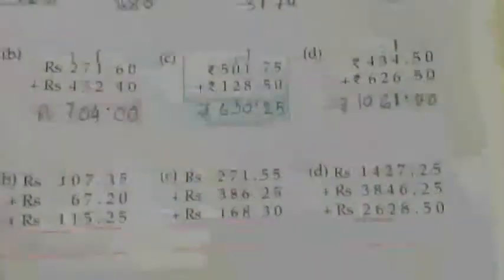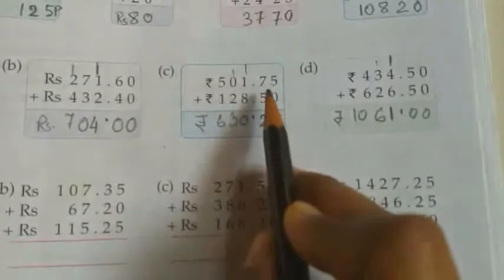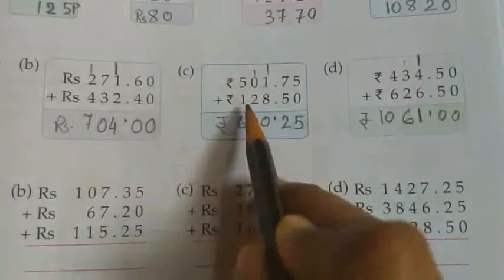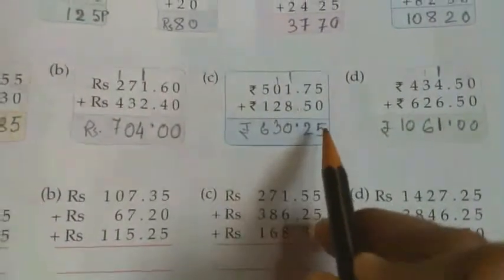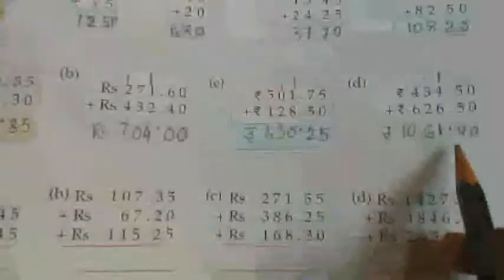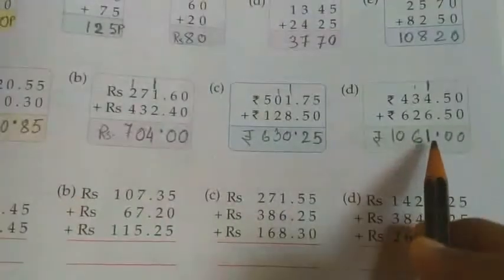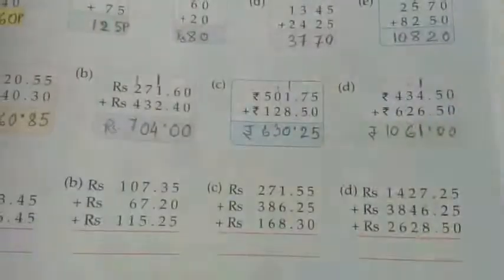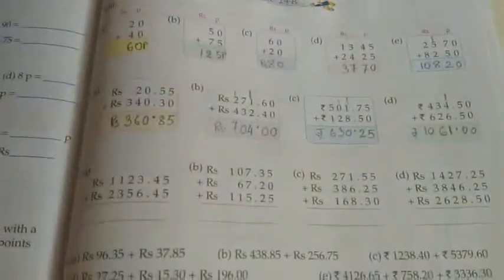The same way both the sums I have done. 501 rupees 75 paise plus 128 rupees 50 paise. I have put the point after 2 paise. Here also, answer is 630 rupees 25 paise. You can do these sums in your book with pencil.